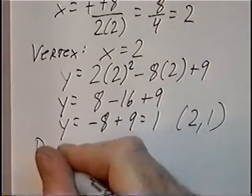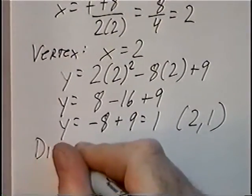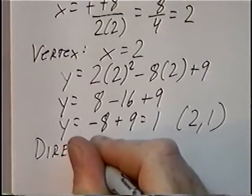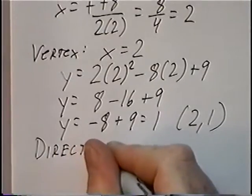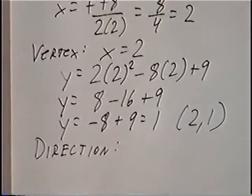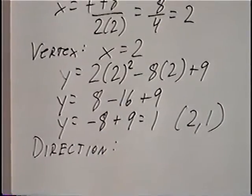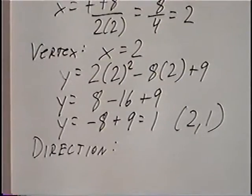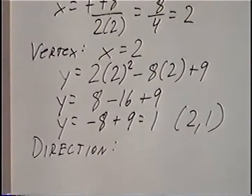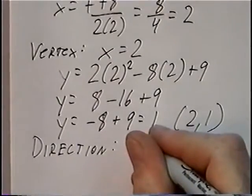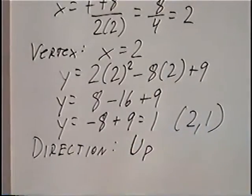The last part before we graph is the direction — either up or down. Looking back at the original equation, 2x squared, the value of a is 2, which is positive. So this parabola will open up.